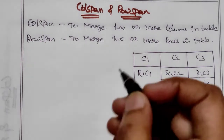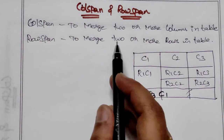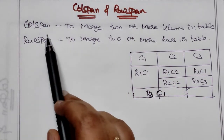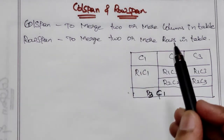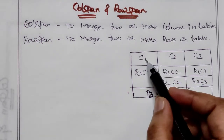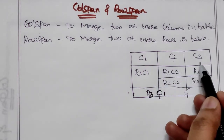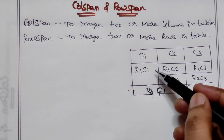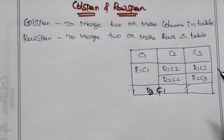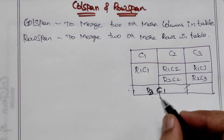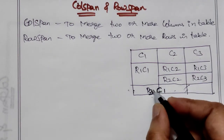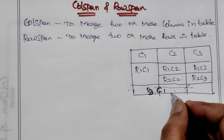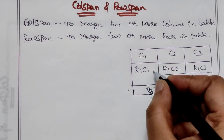Today's topic is about column span and row span in a table. Column span is to merge two or more columns in a table. For example, C1, C2, and C3 are the columns, R1, R2, R3 are the rows. Here I'm merging all the three columns of this row, so this is column span.